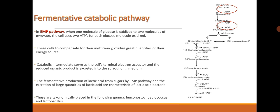Fermentative catabolism includes the EMP pathway. When one molecule of glucose is oxidized to two molecules of pyruvate, the cell uses two ATPs for each glucose molecule oxidized. These cells, to compensate for their inefficiency, oxidize great quantities of their energy source.